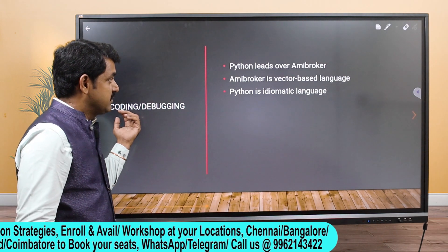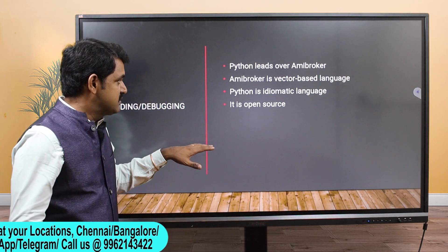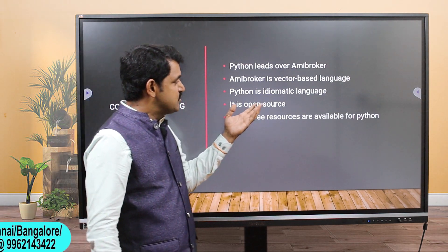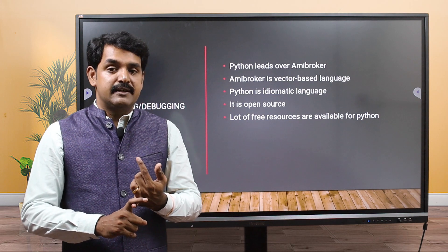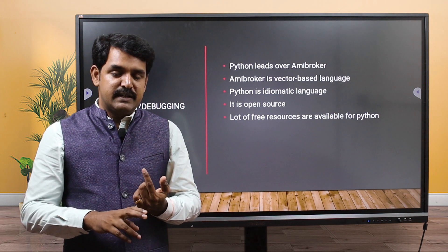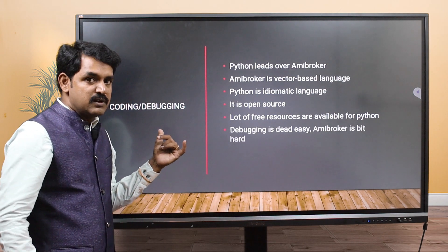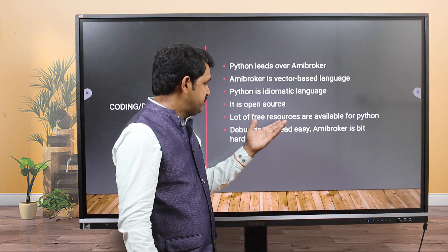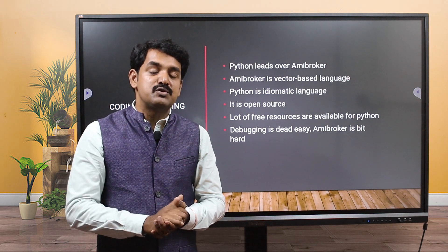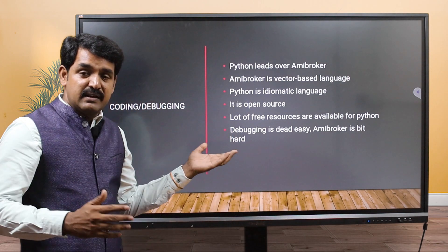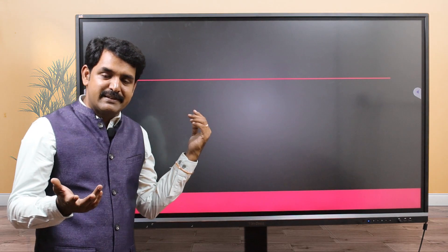Python is an idiomatic language - it's like English. You write: 'if this is equal', 'if this is not', 'if this is empty' - very simple semantics. Python is open source and free of cost, so a lot of help and free resources are available. For AmiBoker, there are only a limited number of people working with it, but a huge community works with Python. AmiBoker is not open source - it is a paid tool. Debugging is dead easy with Python; with AmiBoker it is harder.